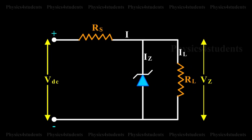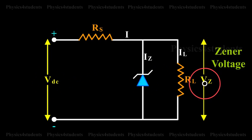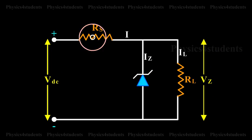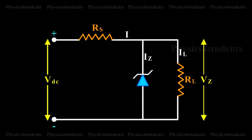The Zener diode in reverse bias condition is connected in parallel with the load RL. Let VDC be the unregulated DC voltage and VZ be Zener voltage, i.e. regulated output voltage. RS is the current limiting resistor. It is chosen in such a way that the diode operates in the breakdown region.